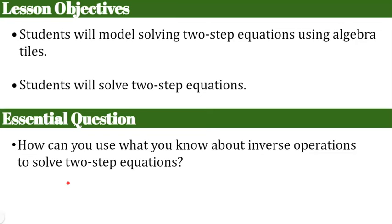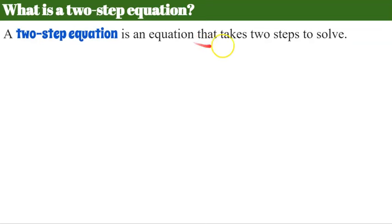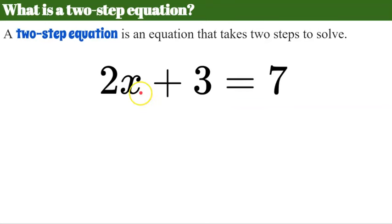Today we're going to apply what you already know. First, we need to understand exactly what is a two-step equation. A two-step equation is an equation that takes two steps to solve. Up until now, you've been solving equations that require one step — either add, subtract, multiply, or divide each side by a value. Today, you're going to have to do two of those things. The big difference is that the coefficient of x is not 1 and it's being added by 3, so there are two things happening to our variable x: it's being multiplied by 2 and added by 3, so it takes two steps to undo those.